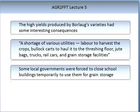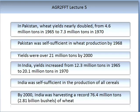Some local governments were forced to close school buildings temporarily to use them for grain storage. In Pakistan, wheat yields nearly doubled from 4.6 million tonnes in 1965 to 7.3 million tonnes in 1970. Pakistan was self-sufficient in wheat production by 1968 — a first at the time — and yields were over 21 million tonnes by 2000. In India, similar trends were seen: yields increased from 2.3 million tonnes in 1965 to a staggering 20.1 million tonnes in 1970. India was self-sufficient in all cereals, and by 2000 was harvesting a record 76.4 million tonnes of wheat.